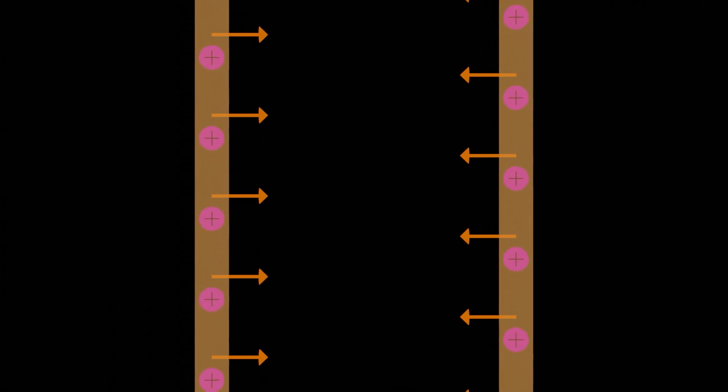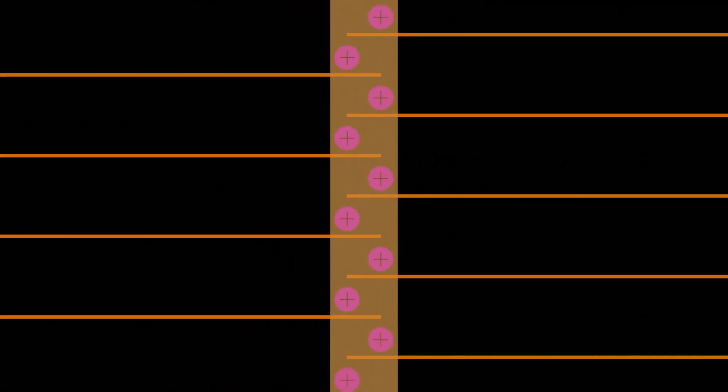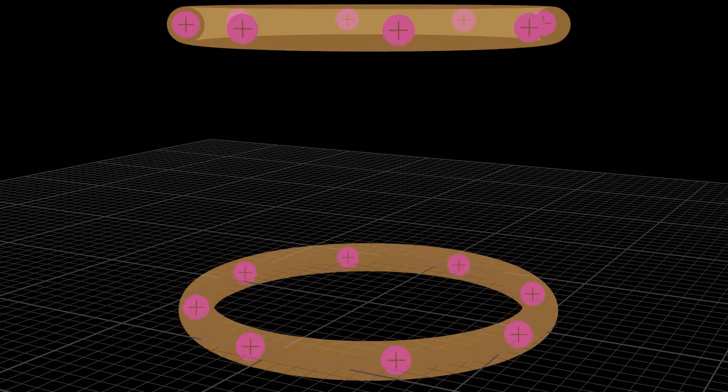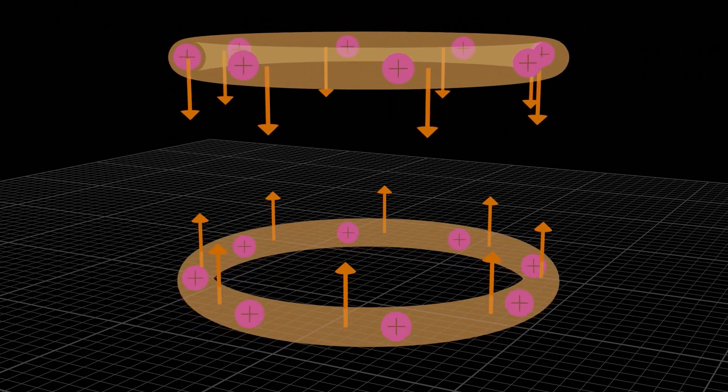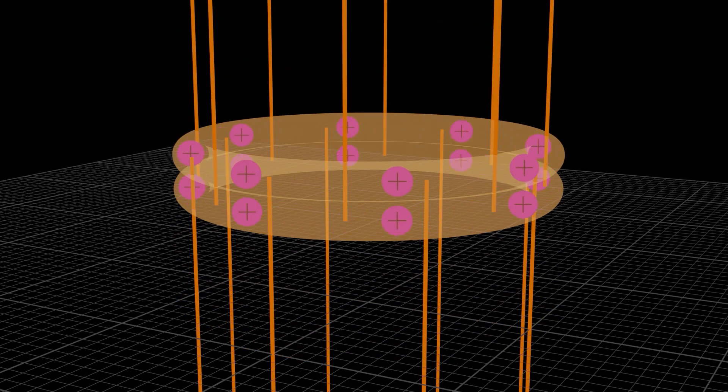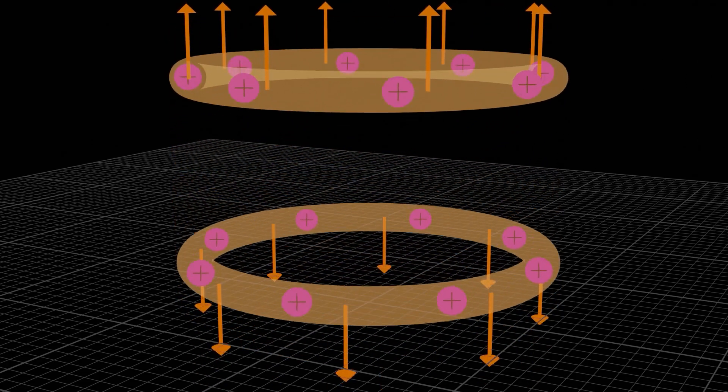To understand how that works, we need to start by thinking back to our current wires next to each other. Do you remember how electric currents going in the same direction attract each other and currents with opposite directions repel each other? Well, we're actually allowed to extend this idea from straight wires to circular loops. If we have current loops that are flowing in the same direction, they'll attract one another as well. And current loops going in the opposite direction will repel one another.